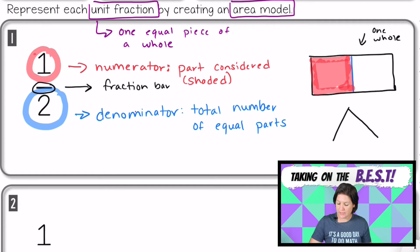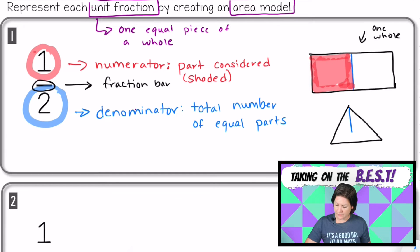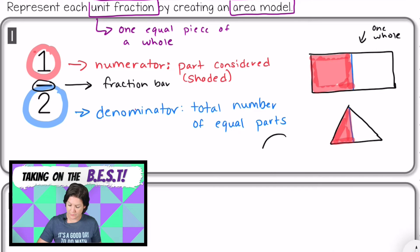You might see other area models when you're referring to unit fractions. Maybe there's a triangle, and if we split that triangle in half and shade in one of those parts, this would also be one half of that whole triangle. Or maybe you have a circle. Our denominator tells us to split it into two equal parts. So we could even split it going this way, into two parts. And then if we shade in one, that would be half of the circle.